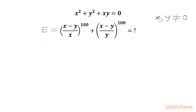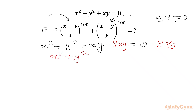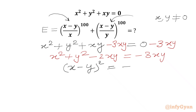We will begin with the known equation: x squared plus y squared plus xy equals 0. In our required expression the numerators contain x minus y, so we will try to make x minus y whole squared on the LHS. I will subtract 3xy from both sides. In the LHS we get x squared plus y squared minus 2xy, and in the RHS we write minus 3xy. So the LHS gives us x minus y whole squared. Therefore x minus y whole squared equals minus 3xy.